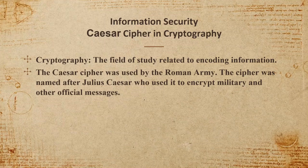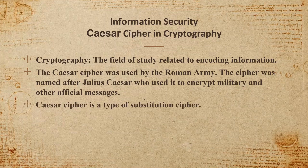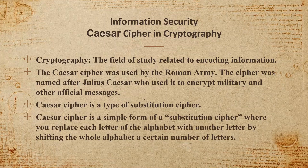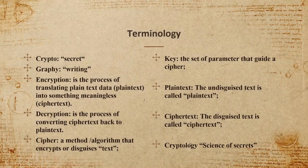Julius Caesar used the cipher to encrypt military and other official messages. The Caesar cipher is a type of substitution cipher — a simple form where you replace each letter of the alphabet with another letter by shifting the whole alphabet a certain number of letters using a key value.